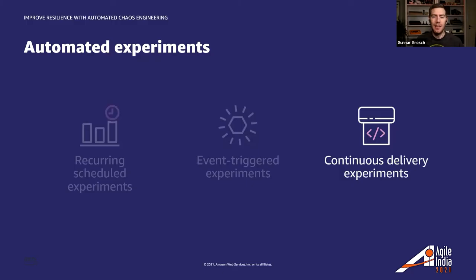Next, we have perhaps the most common and most-asked-about option: doing experiments as part of your delivery pipelines. Continuous integration and continuous delivery has made it possible to do frequent deployments that are less likely to break. By adding chaos engineering experiments as part of our delivery pipelines, we're able to continuously verify the behavior of our system. When you make a code change and deliver it through your pipeline, you can run experiments to verify the system still works as intended — and if it doesn't, you can roll back and make the necessary changes to the code.